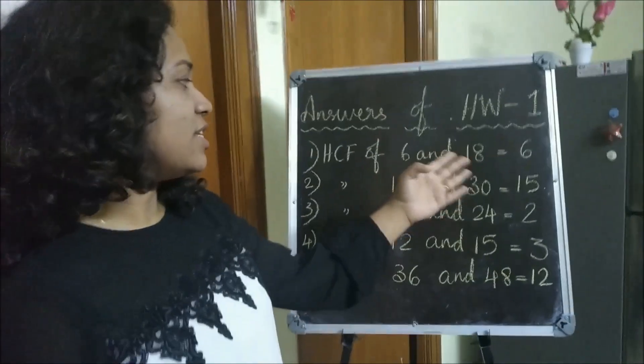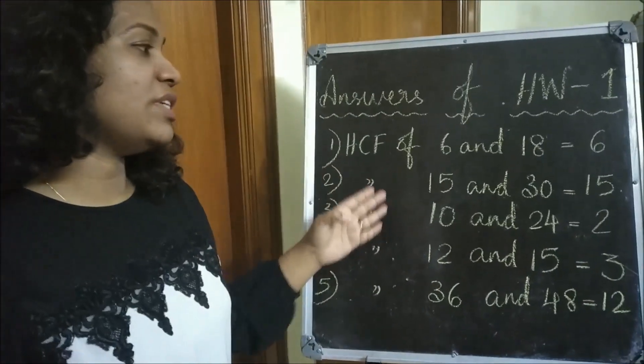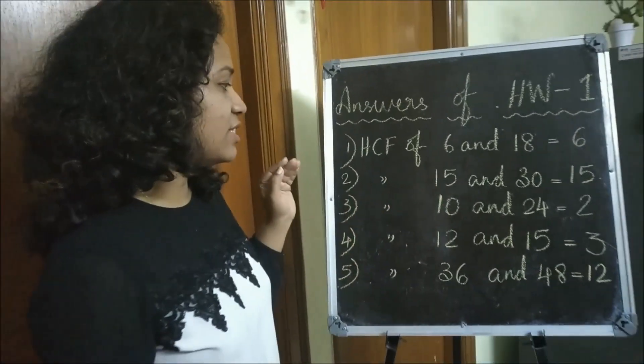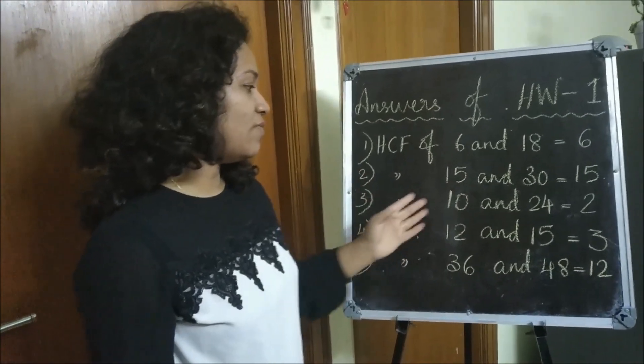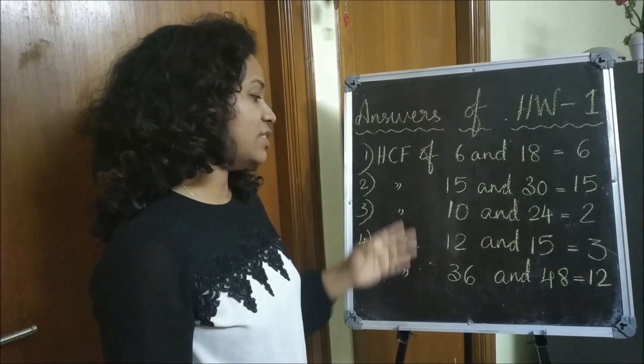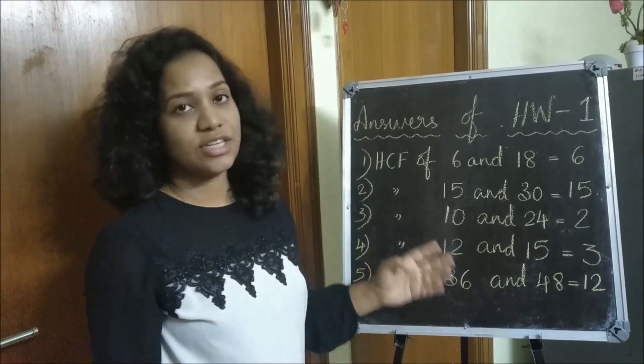HCF of 6 and 18 is 6, HCF of 15 and 30 is 15, HCF of 10 and 24 is 2, HCF of 12 and 15 is 3, HCF of 36 and 48 is 12.